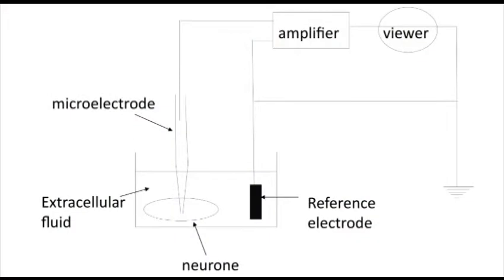One of the techniques that we can use to measure the resting membrane potential is called intracellular recording, which is a type of electrophysiology. Intracellular recording involves impaling a neuron with a sharp glass microelectrode, which is connected to an amplifier and a voltmeter, or an oscilloscope. This technique works on the principle that we can measure the voltage inside the membrane — intracellular — using a recording electrode, and compare it to the voltage outside the membrane — extracellular — measured using a reference or bath electrode.